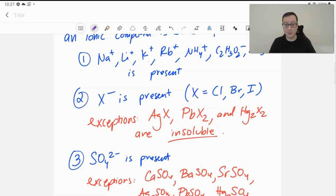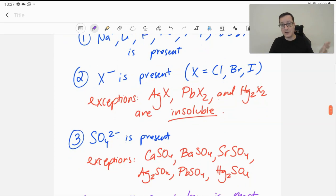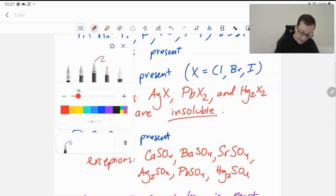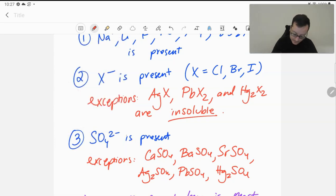Sulfate makes things soluble unless you are calcium sulfate, barium sulfate, strontium sulfate, or any of those same exceptions from the last rule. So silver, lead 2, and mercury 1. All of those sulfates are insoluble.